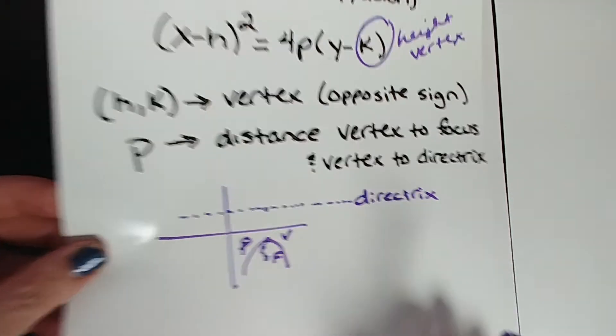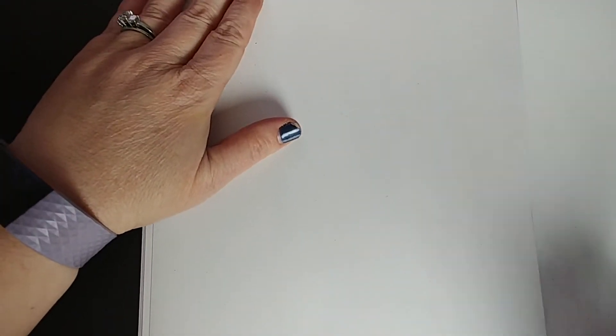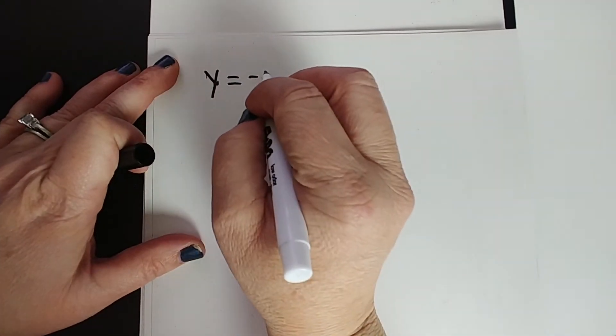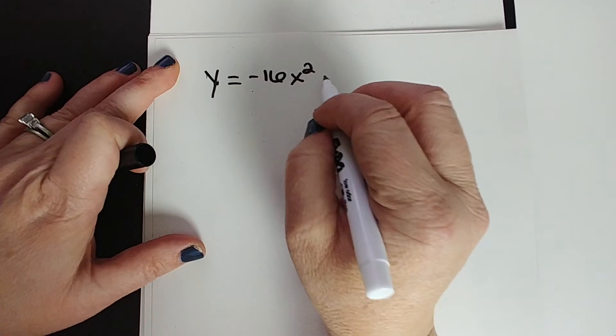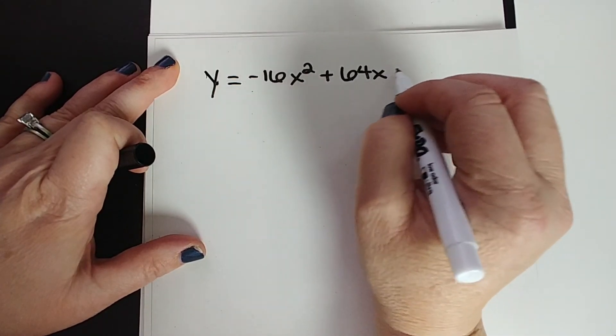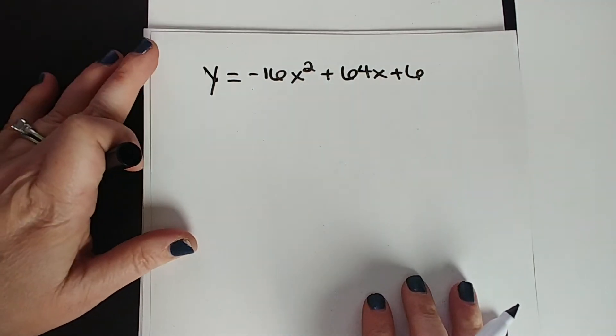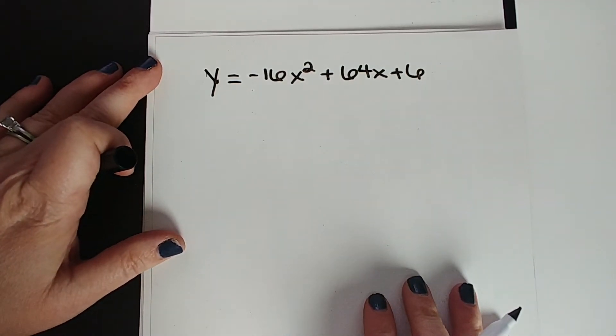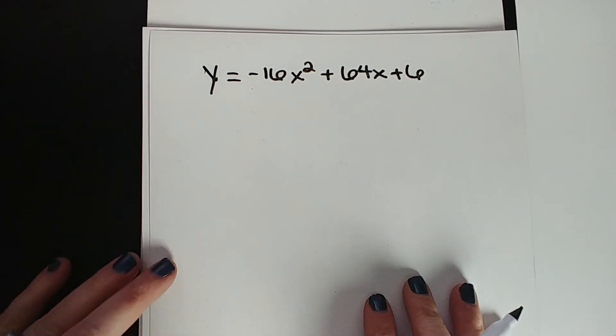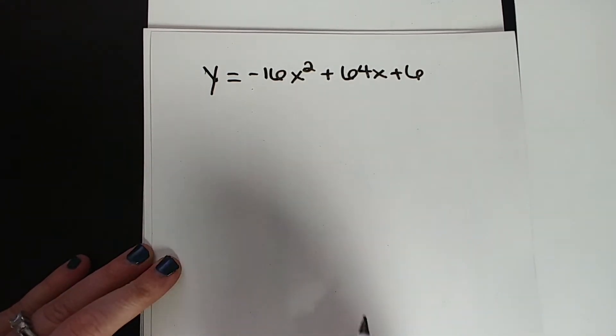Let's get a clean piece of paper and let's get started. So let's just put what they gave us. They gave us the equation. We don't want to bring that whole word problem back because we really don't need it. So we got y equals negative 16x squared plus 64x plus 6. The first thing we're going to do is we're going to complete the square to solve this thing.